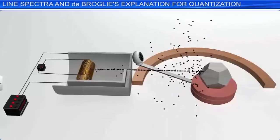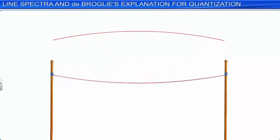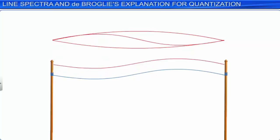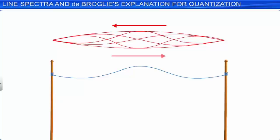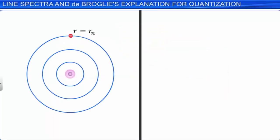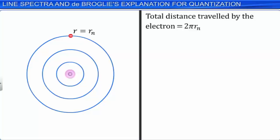When a string is plucked, a large number of wavelengths are produced. But only those wavelengths survive which have nodes at the ends and form standing waves along the string. Thus, standing waves are formed only when the total distance travelled by the wave in a to-and-fro direction is equal to one wavelength, two wavelengths, or any integral number of wavelengths. Applying this concept to an electron in the nth circular orbit of radius rₙ, the total distance travelled by the electron is 2πrₙ. Hence, 2πrₙ = nλ, where n = 1, 2, 3, and so on — equation 7.